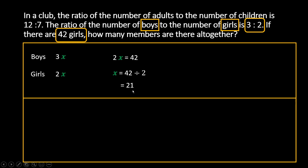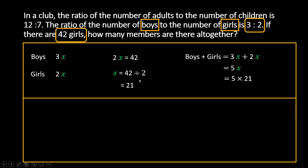So we have found the value of x. If you want to find out how many boys and girls there are altogether, boys plus girls is equal to 3x plus 2x, which is equal to 5x. And x value is 21, so this is equal to 5 times 21, which is 105.